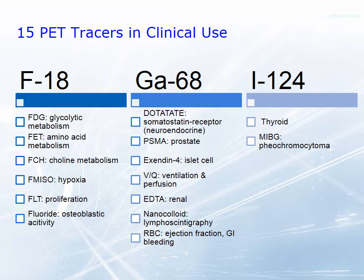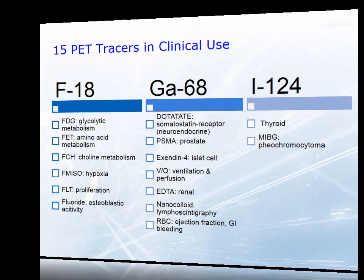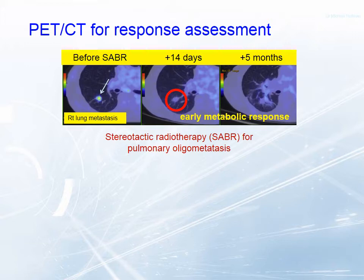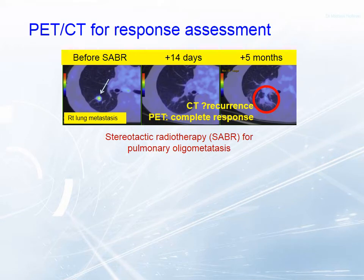We have over 15 PET tracers now in clinical use at Peter Mac. Stereotactic radiotherapy is a particularly promising treatment for metastatic disease because it's well-tolerated and doesn't cause too much patient morbidity. A patient with a solitary lung metastasis in a stereotactic radiotherapy study had a repeat PET scan 14 days after commencing treatment showing an early metabolic response. At five months, the mass looks a little larger on CT — querying recurrence — but the PET scan shows no activity, suggesting an ongoing complete response with scar and adjacent radiation pulmonary fibrosis.